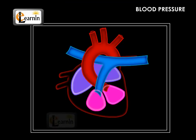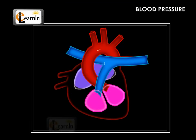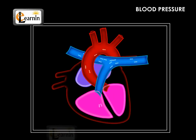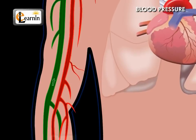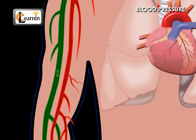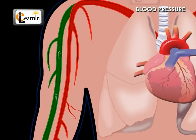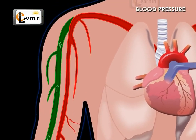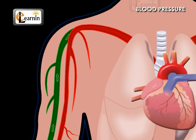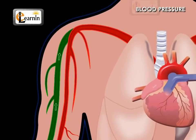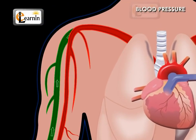When diastole occurs, more blood is pumped by the heart. The blood vessels return to the normal diameter and maintain blood pressure at a lower level. This is diastolic pressure.